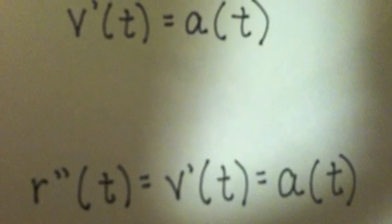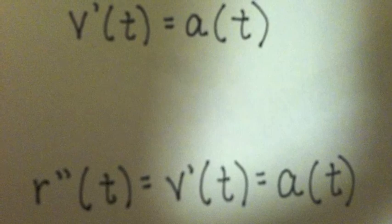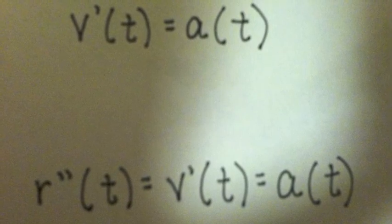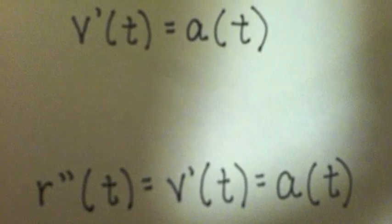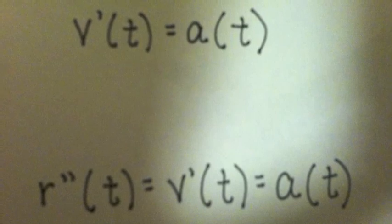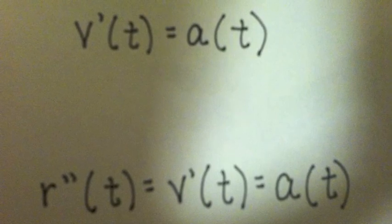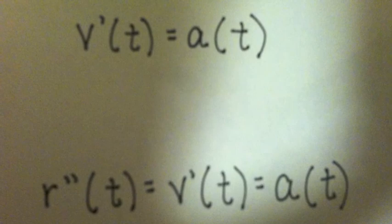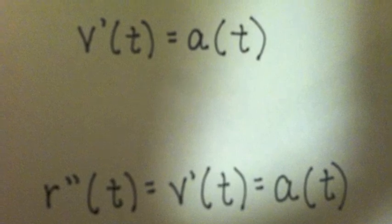We therefore know that r''(t) is equal to v'(t) which is equal to a(t). And this makes sense, given what we know and what we've just explained about the relationship of r and v and a.